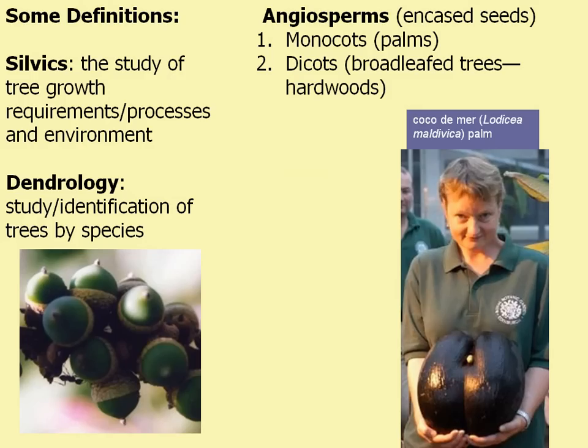Dendrology is the actual study and identification of individual trees by species. When we talk about trees, trees are divided into two groups: your angiosperms, which include palms and broadleaf trees, your monocots and dicots.